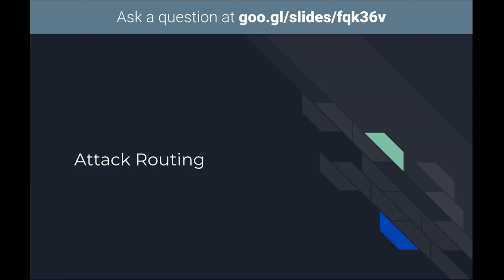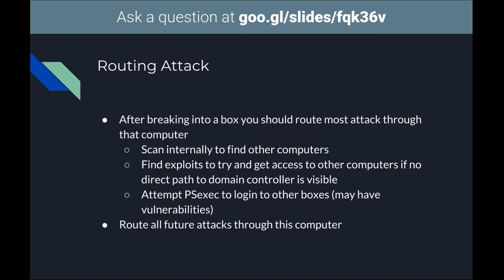I want to talk about attack routing before enumeration because you can use attack routing through the network to help with enumeration when you're inside. Attack routing basically means that after you've broken in, you want to route all of your traffic through the box you've popped instead of coming through the firewall where something might get dropped. If you do that, you're less likely to be caught because it looks like traffic coming from that computer instead of a foreign source. You're still piping traffic to that computer, but you're less likely to have a dropped connection if you route all of your attacks.